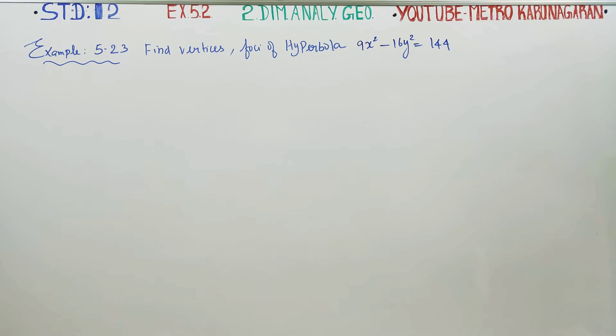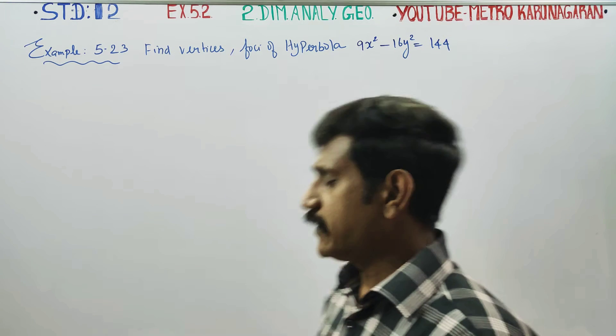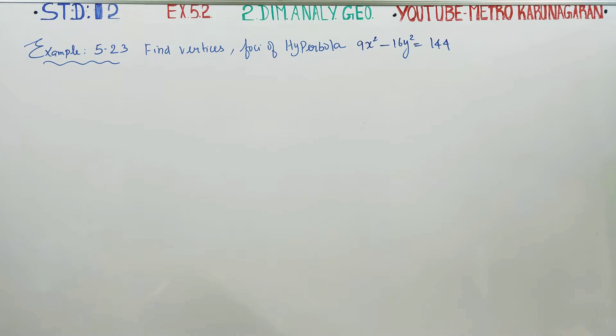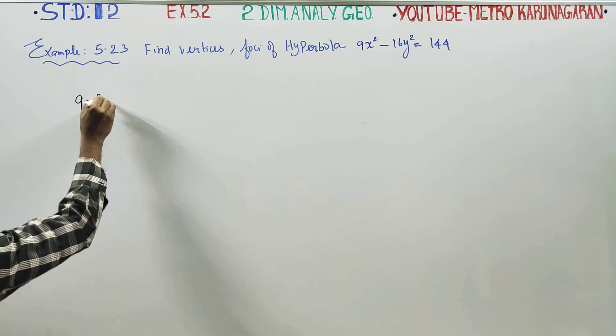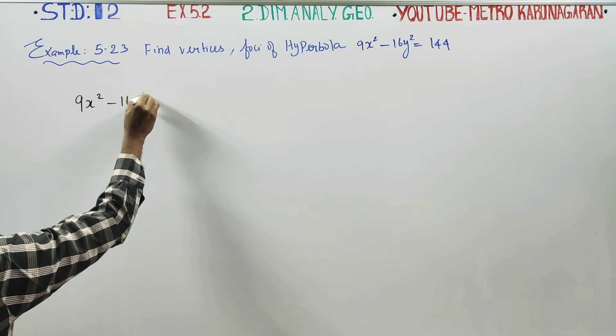Dear 12th standard students, in exercise number 5.2, related example 5.23 in two-dimensional analytical geometry, find the vertices of the hyperbola 9x² minus 16y² equals 144.